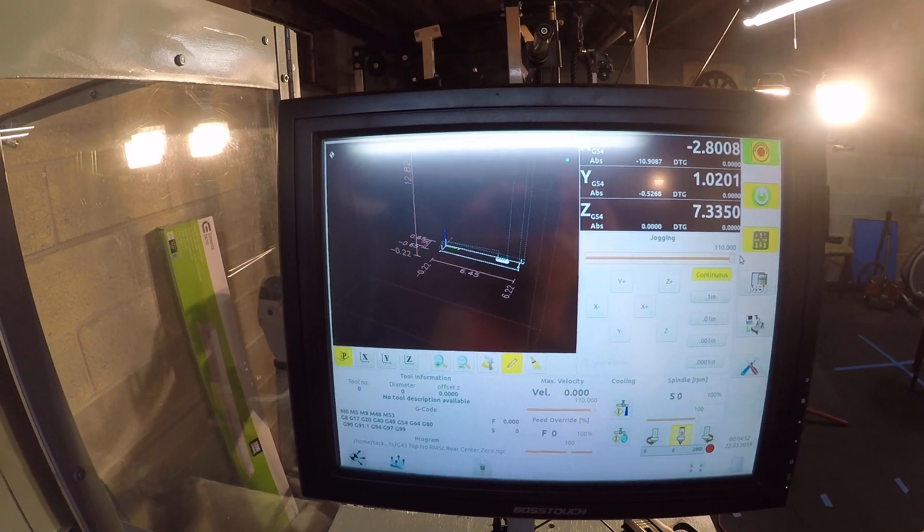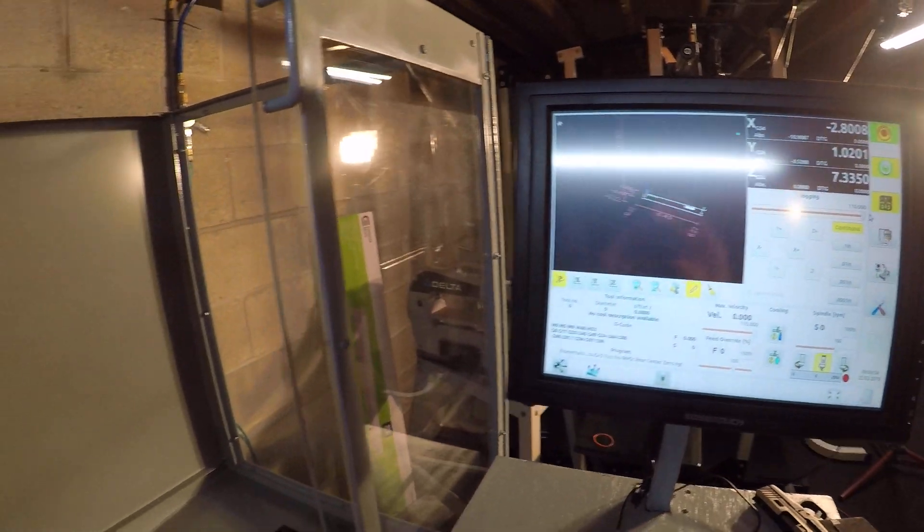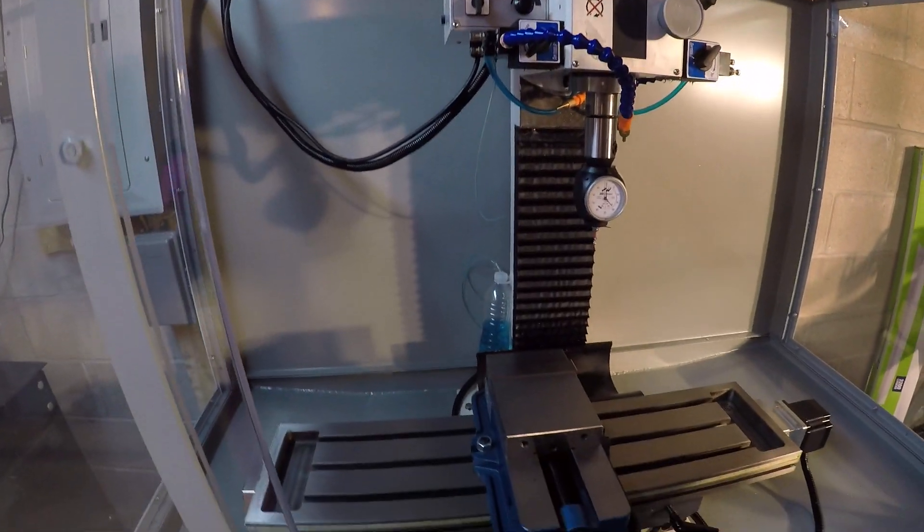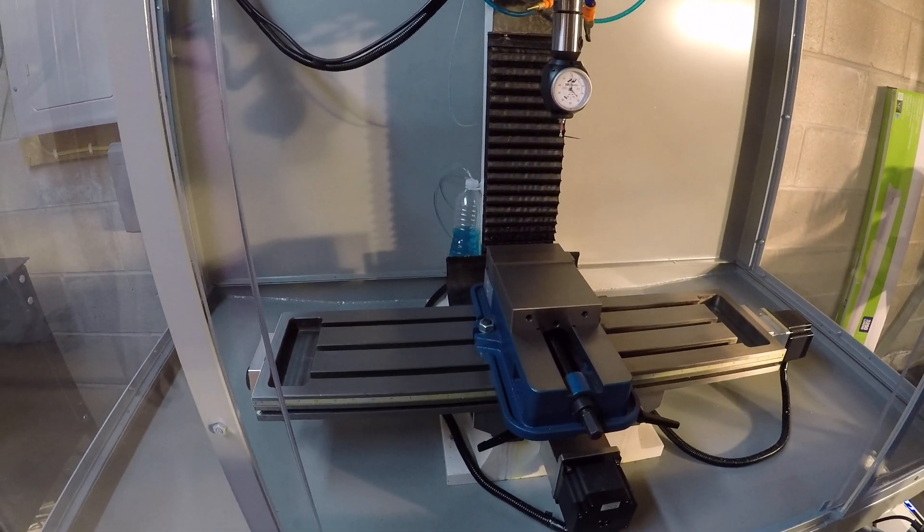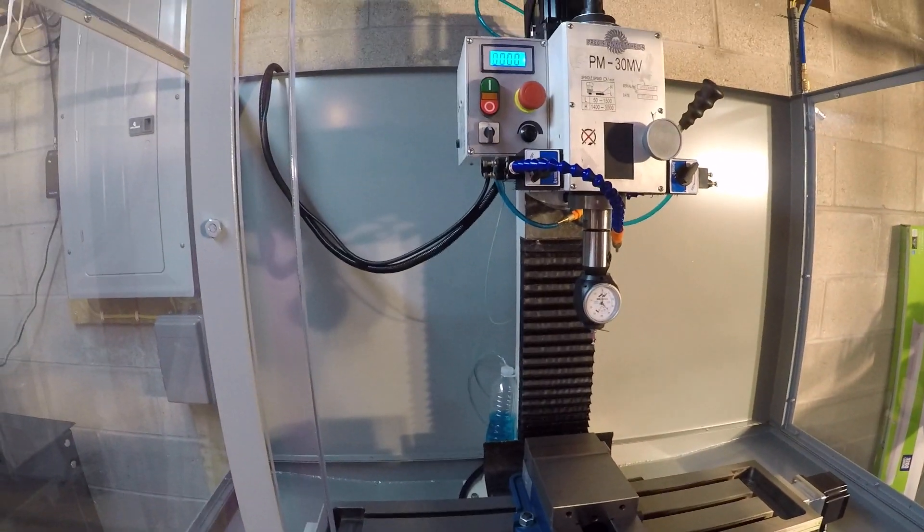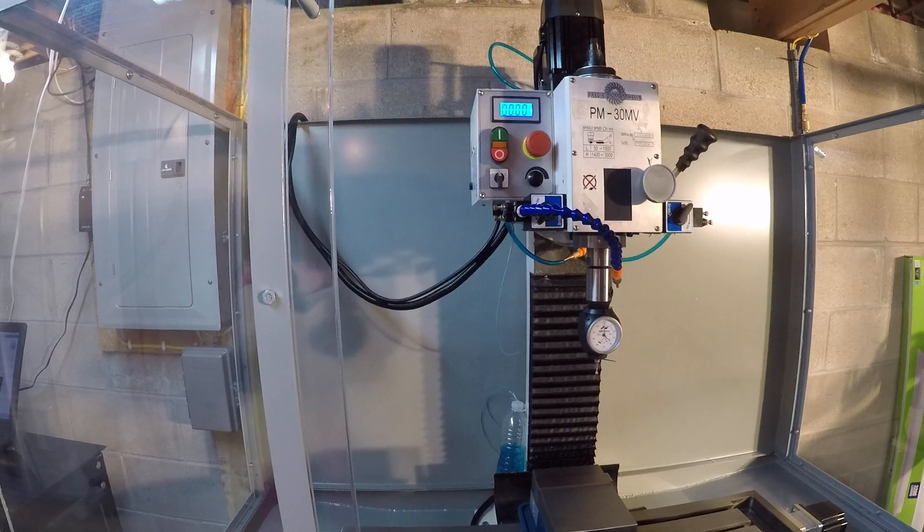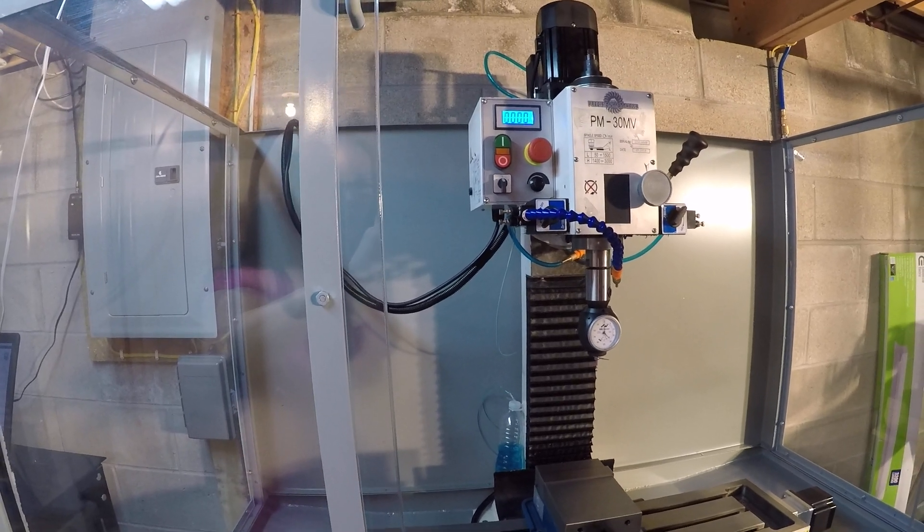The machine currently I have set up for 110 inches per minute travels. So in all axes, it travels at 100 inches per minute. And I sort of stole those numbers from the Tormach 1100. So I tried to mimic that. It's about the same size.